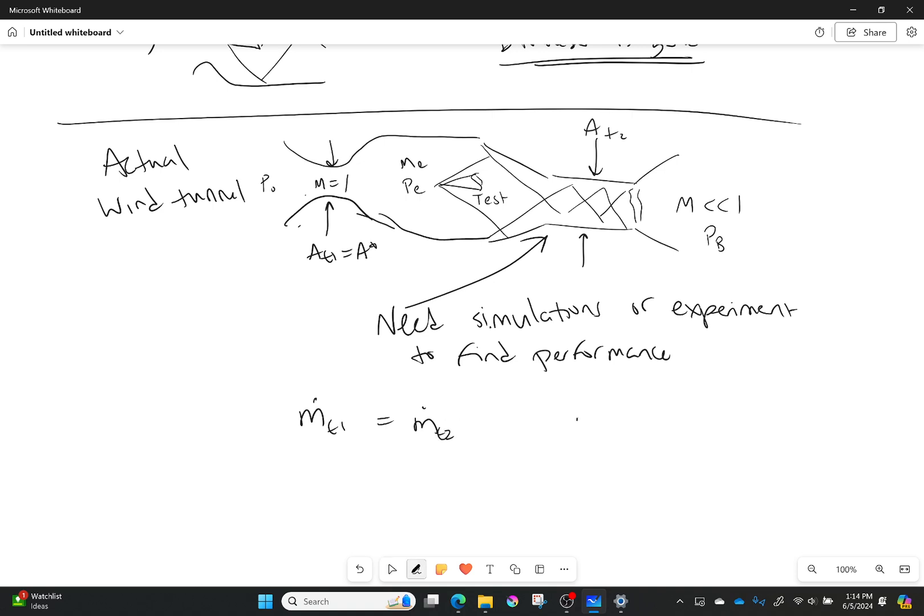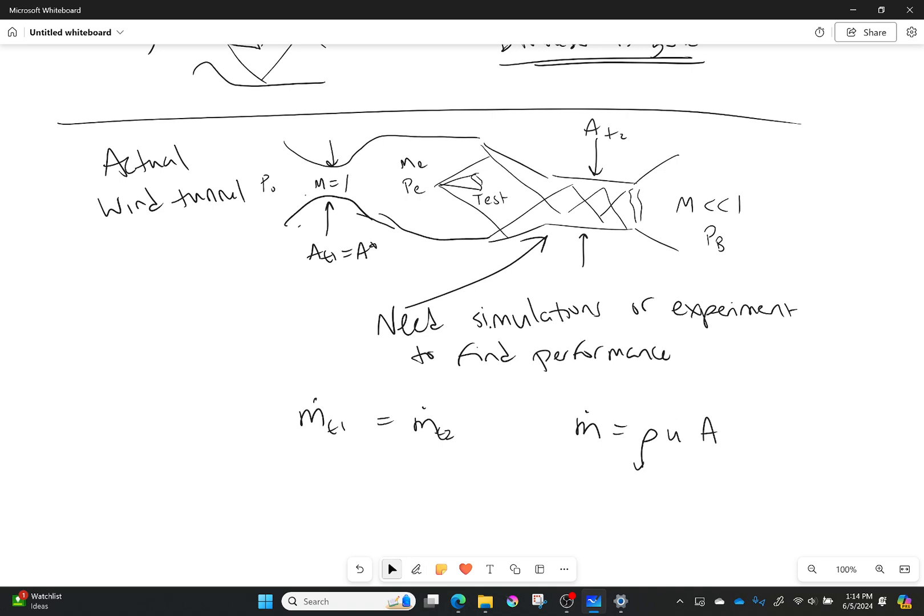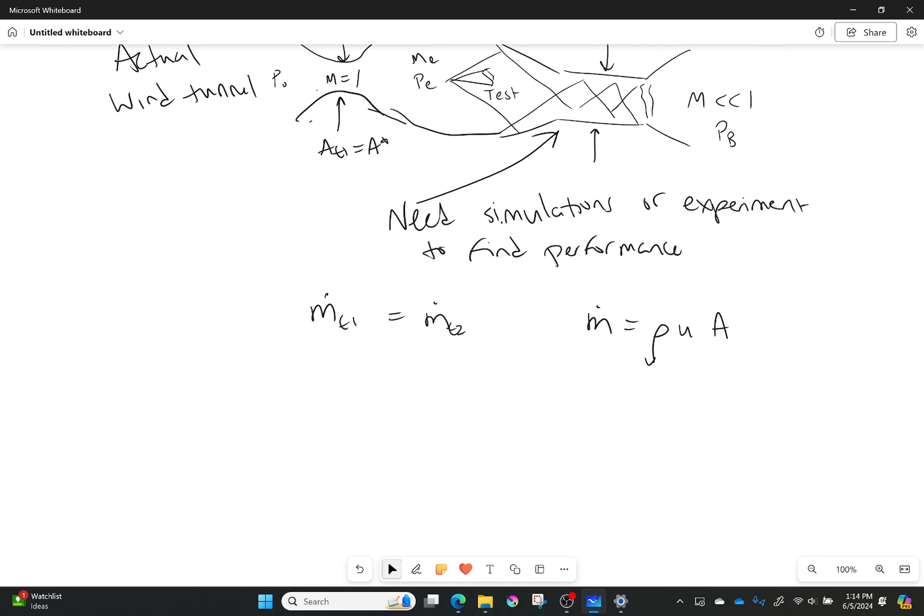And mass flow is equal to my density times my velocity times my area. So let's plug it in there. So density 1 velocity 1 area 1 is equal to density 2 velocity 2 area 2. We got it.